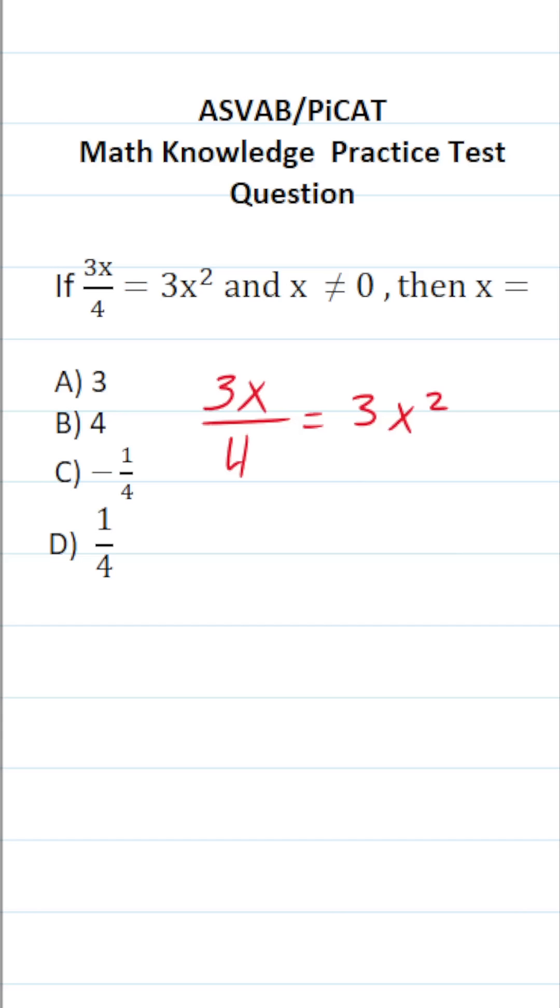In this case, I'm going to start solving this equation by clearing 4 from the denominator of 3x. More specifically, I'm going to do that by multiplying both sides of the equation by 4. In doing so, this crosses out, leaving me with 3x on this side. 3x squared times 4 is 12x squared.